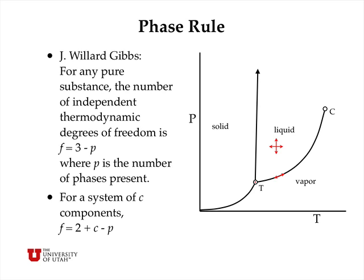There's only one point on the diagram where all three phases are present — that's the triple point — and we can't move in any direction in pressure or temperature. So if we have three phases, we have zero degrees of freedom, F equals zero. More generally, for a system of C components — for example, liquid water and liquid acetone mixed together — the number of degrees of freedom would be two plus C minus P, the number of phases present.